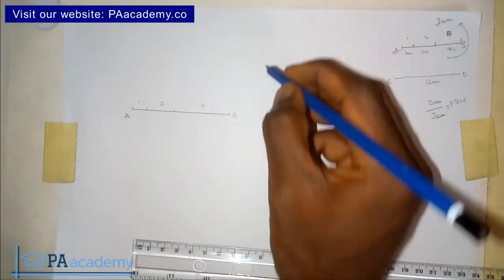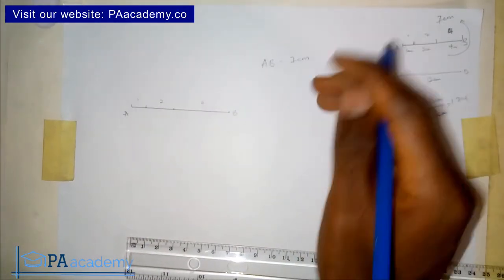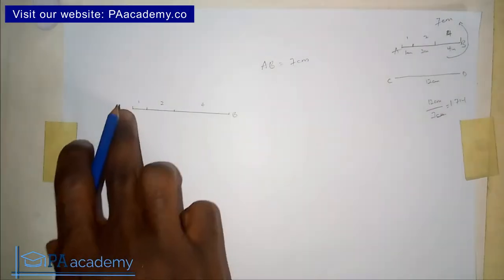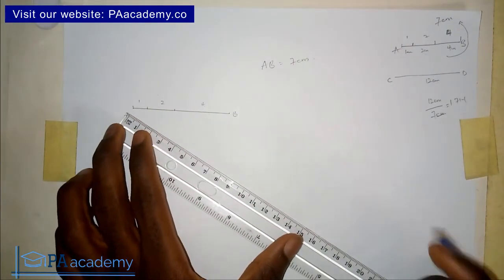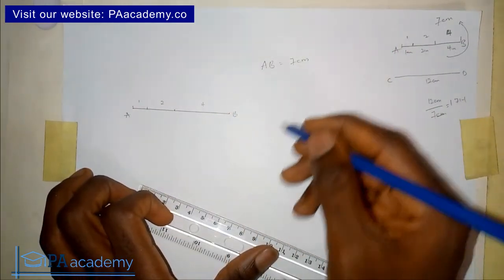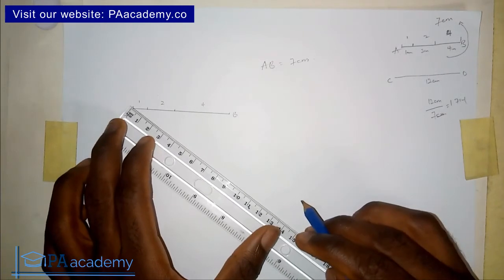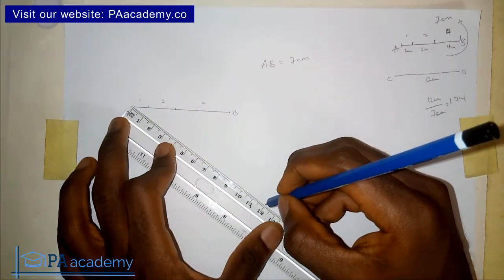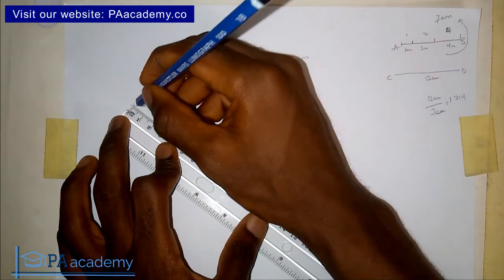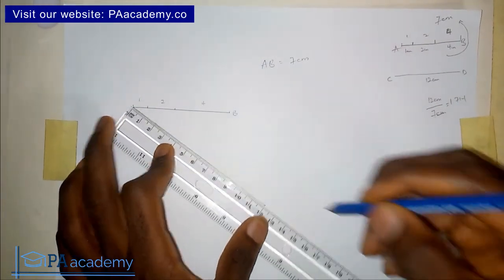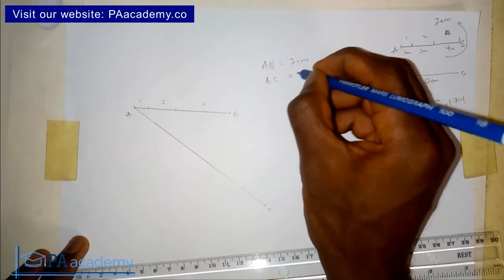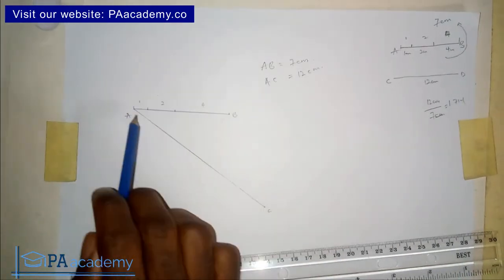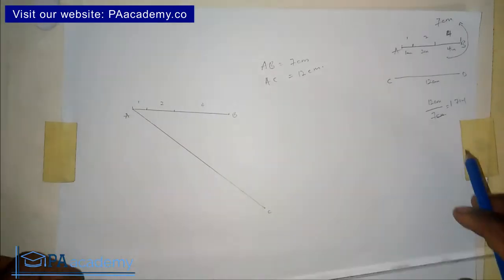Now I want to replicate this on a line of 12 centimeters. Line AB is seven centimeters; I want to replicate its proportions on a line of 12 centimeters. From point A, at a convenient angle, you draw a line of 12 centimeters. Let's call this line AC, so line AC equals 12 centimeters. Once we replicate the proportions, this line AC will be divided in the same ratio as line AB.